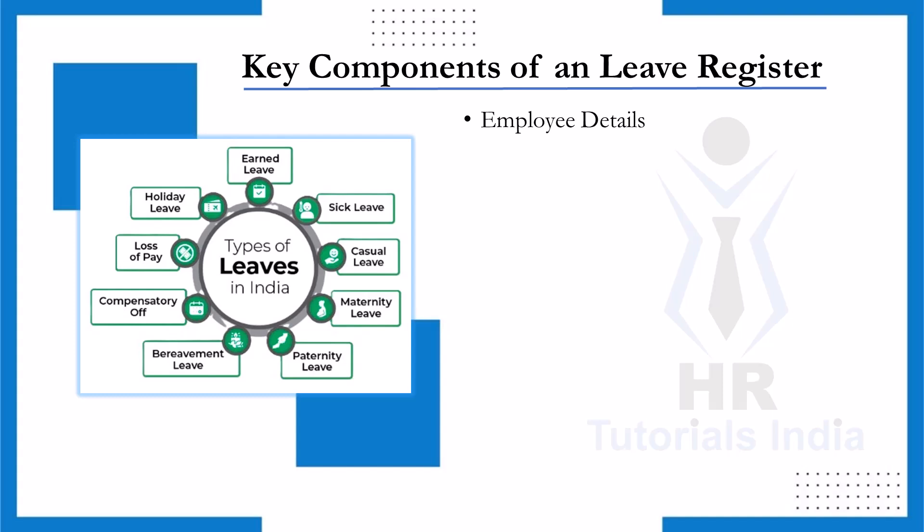Employee details ensure leave data is accurately associated with the right individual. Leave categories: List the various types of leaves allowed by the organization, such as casual leave, sick leave, earned leave, maternity leave, paternity leave, or unpaid leave. This categorization helps in tracking and managing different types of leaves efficiently. Leave balances: Maintain columns to show total leaves allotted, leave availed, and remaining leave balance, ensuring that employees and HR have clarity on leave entitlements.